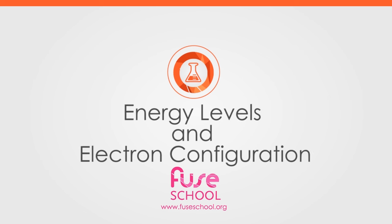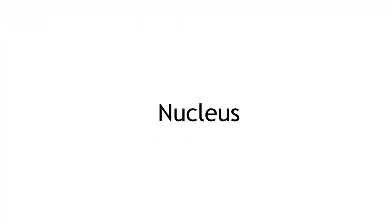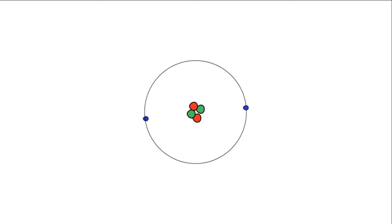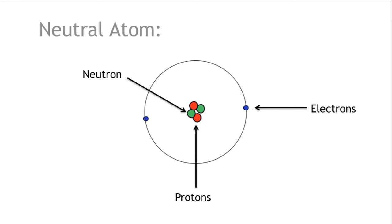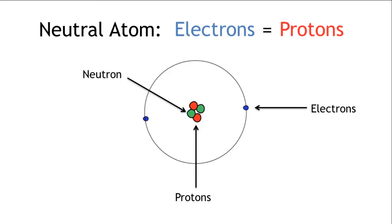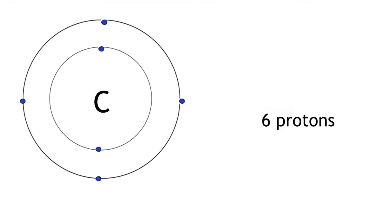In a previous video, we learnt that the nucleus is at the centre of an atom, and that it is made up of protons and neutrons. And around this central point, we find the electrons. We also know that in a neutral atom, the number of electrons always equals the number of protons. So in a neutral atom of carbon, there are six protons, which means there must be six electrons.